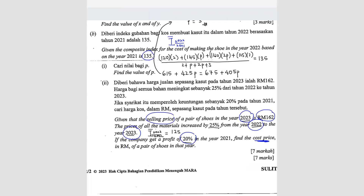So first step, we find the composite index of 2023 based on 2021. We take the two eyes and multiply them: 135 times 125, then divide by 100. So when you divide by 100, you get 168.75. Now you've already found the composite index of 2023 based on 2021.